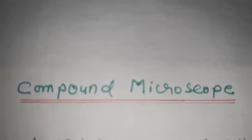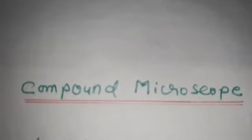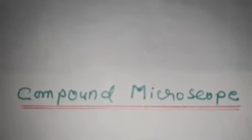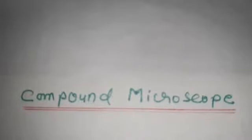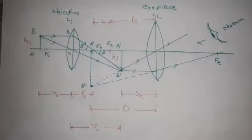Good evening students. This is lecture number 13 on ray optics. In this lecture we are going to discuss our next optical instrument, that is the compound microscope. In the last lecture we discussed the simple microscope. Both the simple microscope and the compound microscope are used to see tiny objects, but in the simple microscope there is only one lens, whereas in the compound microscope we have a combination of lenses — that is why it is called a compound microscope.